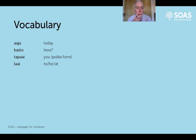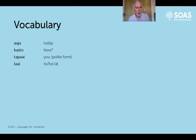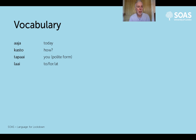The next word is 'lai', which is a postposition. In English, many words like 'at', 'to', 'for', or 'with' come before the noun - so 'with me', 'with him', 'for her'. In Nepali, the equivalent words come after other words. So 'tapai' means 'you', and 'tapai lai' means 'to you', 'for you', or 'at you'.